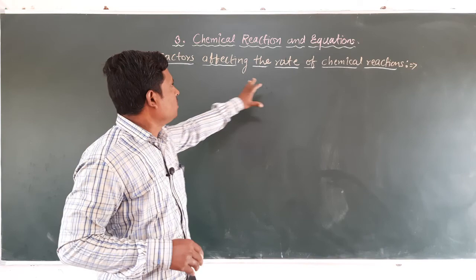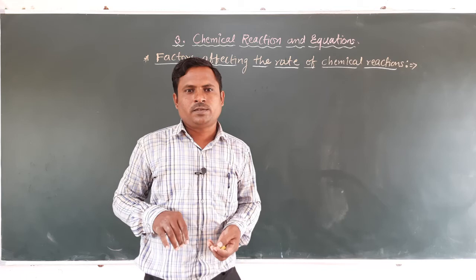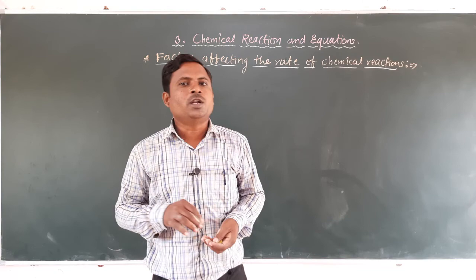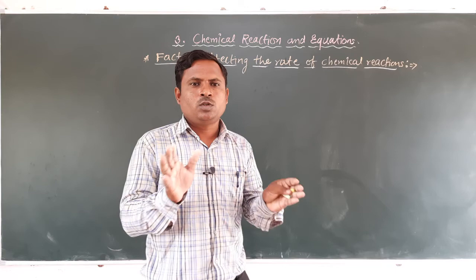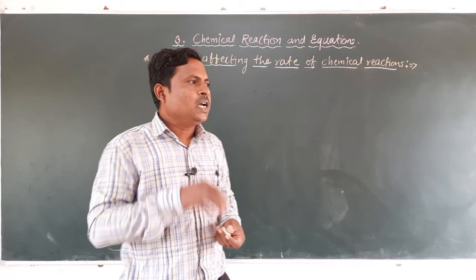Generally, there are five factors in our syllabus that affect the rate of chemical reaction. The rate of chemical reaction means the speed of the chemical reaction. Basically, there are five factors that affect the rate of chemical reaction.